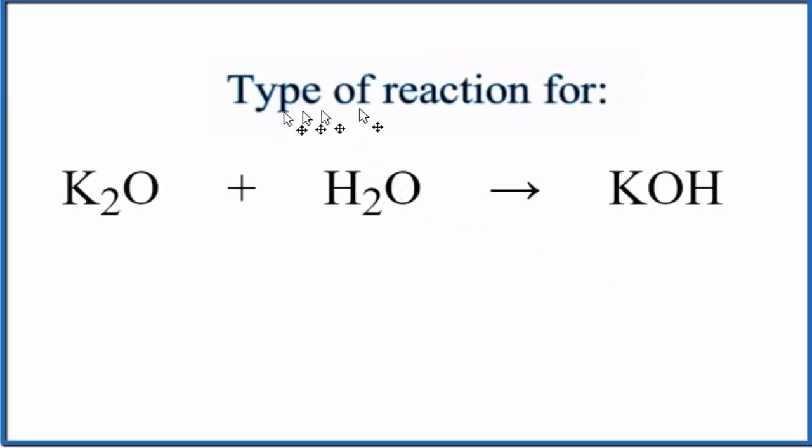In this video, we'll take a look at the type of reaction for K2O plus H2O yields KOH. Potassium oxide plus water gives us potassium hydroxide.